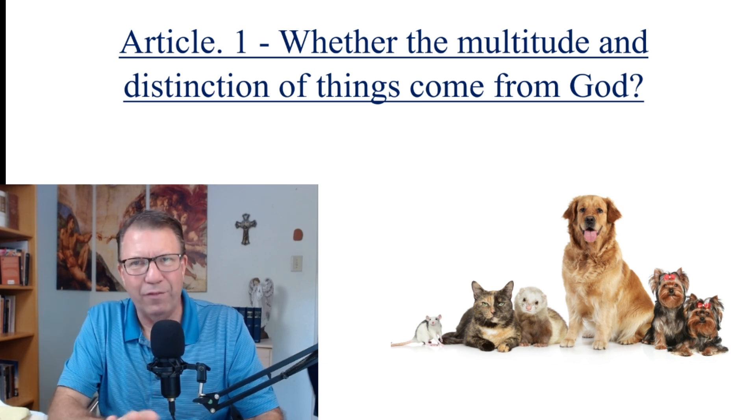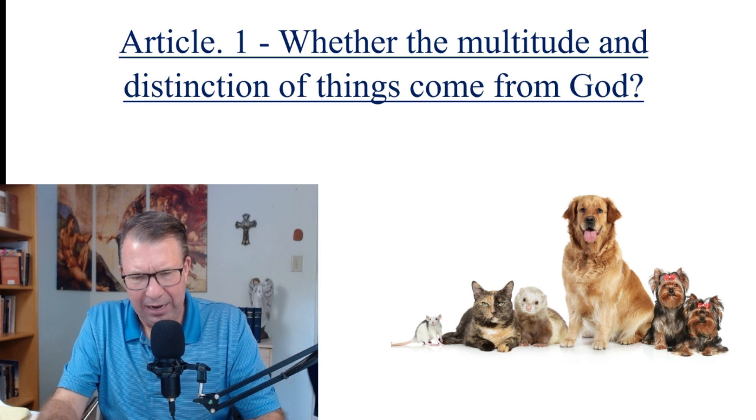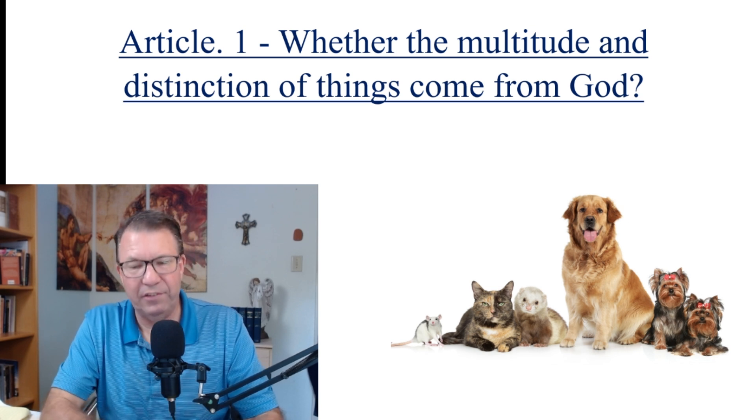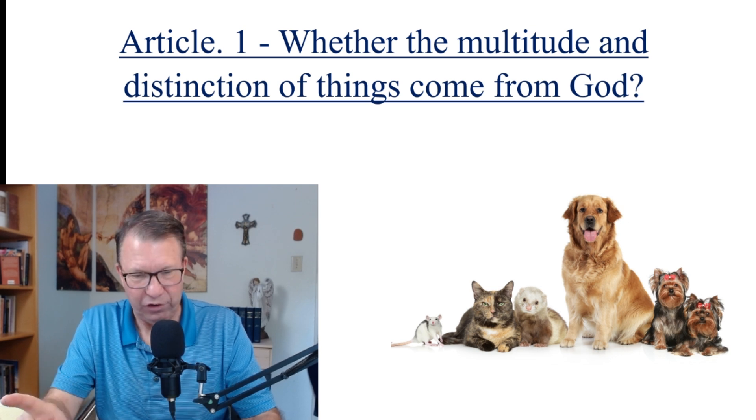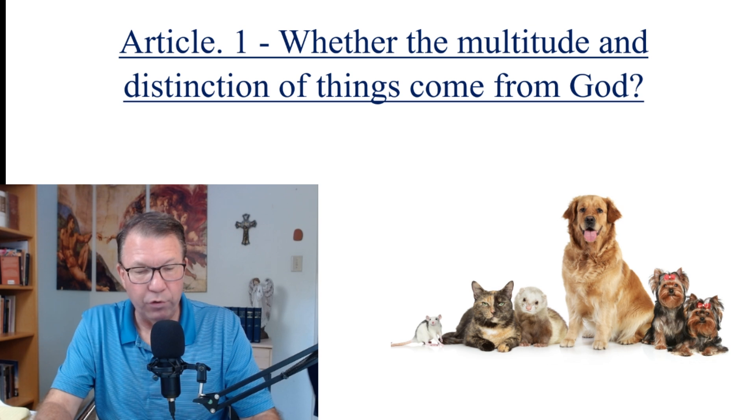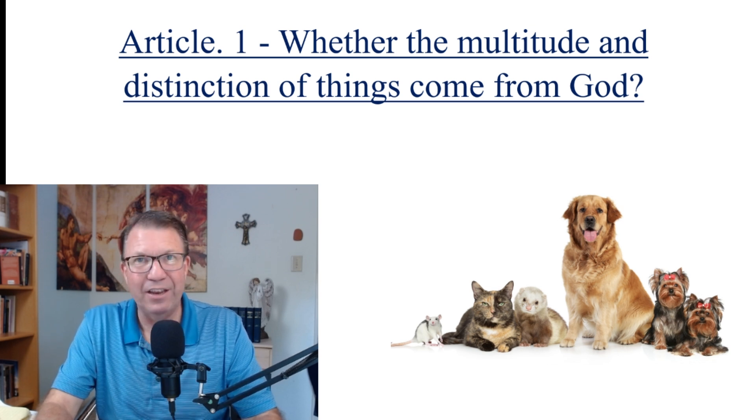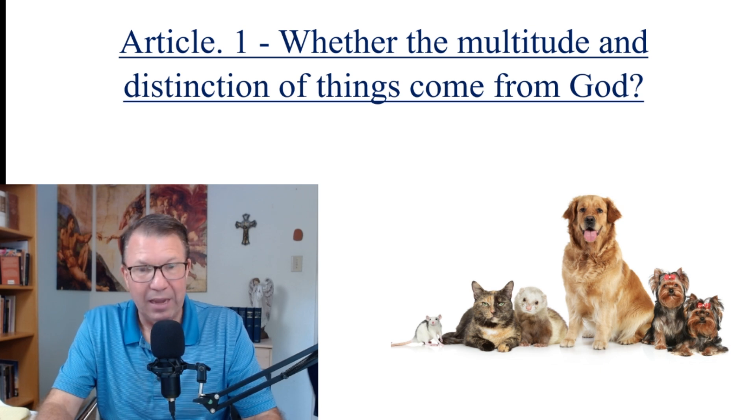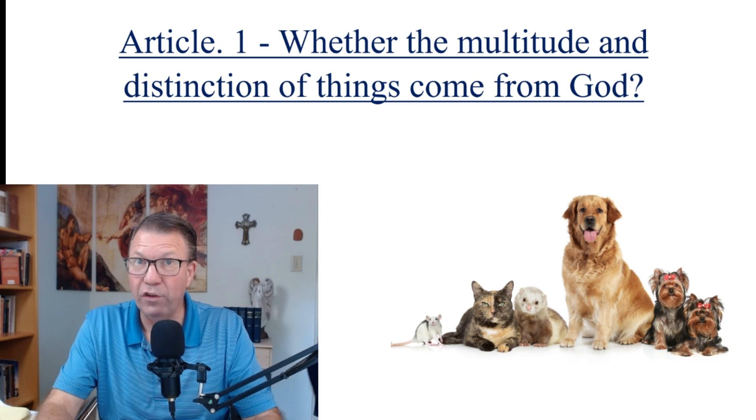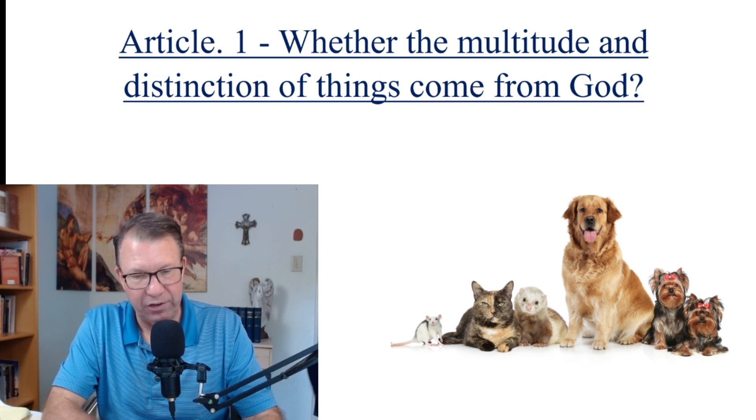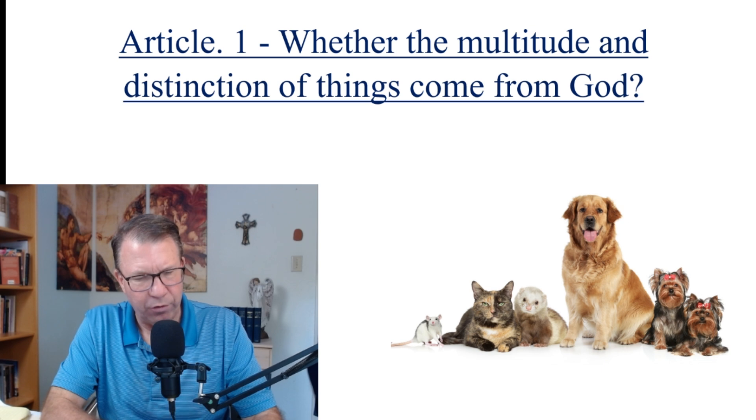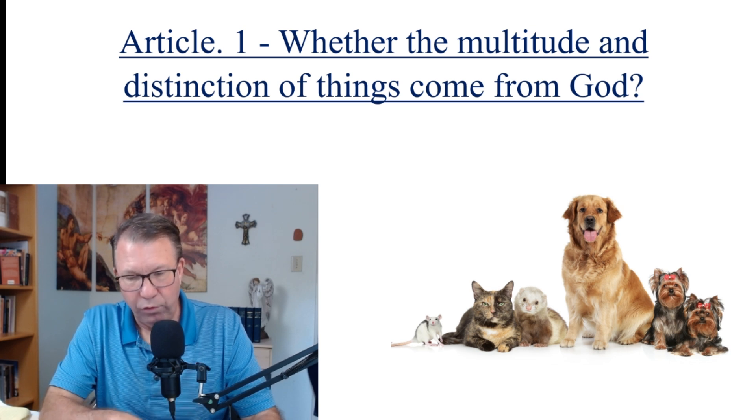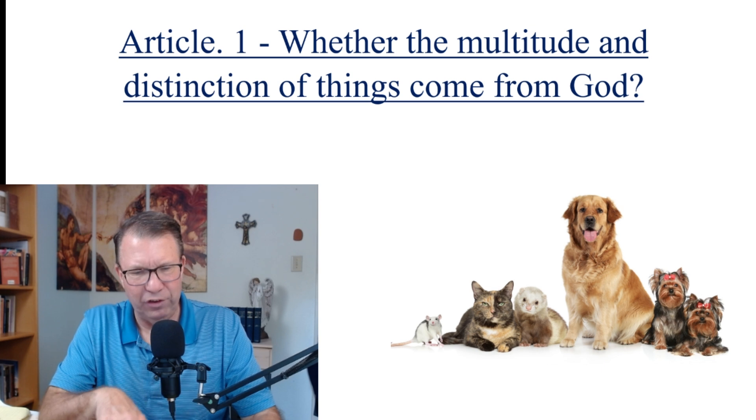And here's what Thomas says. In this paragraph right here is what I referred to a moment ago. It's absolutely beautiful, and I just love this. He says, hence, we must say that the distinction and multitude of things comes from the intention of the first agent, who is God. For he brought things into being in order that his goodness might be communicated to creatures and be represented by them. And because his goodness could not be adequately represented by one creature alone, he produced many and diverse creatures. And what was wanting to one in the representation of the divine goodness might be supplied by another. For goodness, which in God is simple and uniform, in creatures is manifold and divided, and hence, the whole universe together participates the divine goodness more perfectly and represents it better than any single creature whatever.